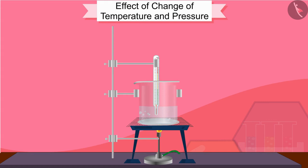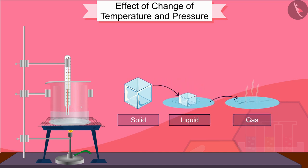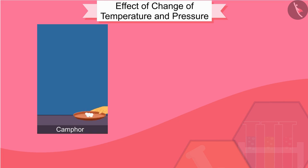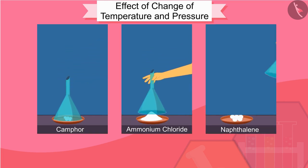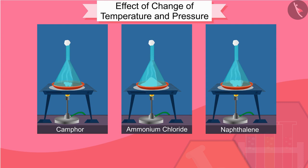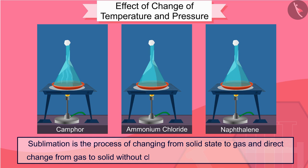When matter is heated it changes from solid to liquid and liquid to gas. But do all substances follow this rule? No — there are some substances such as camphor, ammonium chloride, and naphthalene that convert directly from the solid state to gas. Sublimation is the process of changing directly from solid state to gas. The direct change from gas to solid without changing into liquid is called deposition.